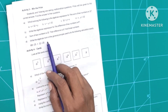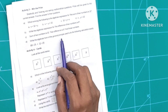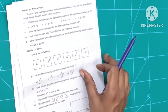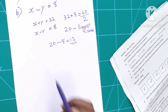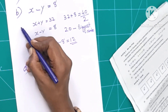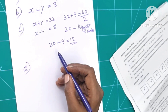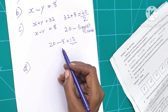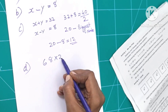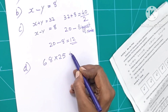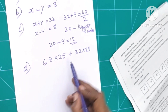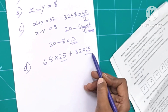If you write the algebraic form of the general principle used to do the following calculation, you can read it easily. The example is: 68 times 25 plus 32 times 25. Notice that 25 is common in both terms.